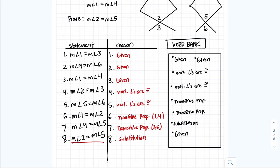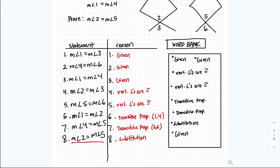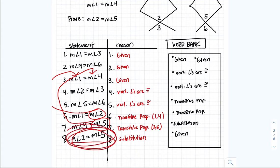For the last statement in problem 3: we got measurement angle 1 equals measurement angle 2 from the transitive property, and we got measurement angle 4 equals measurement angle 5 from the transitive property. If we substitute measurement angle 2 in for measurement angle 1, and substitute measurement angle 5 in for measurement angle 4, we get measurement angle 2 equals measurement angle 5. That's the substitution property.